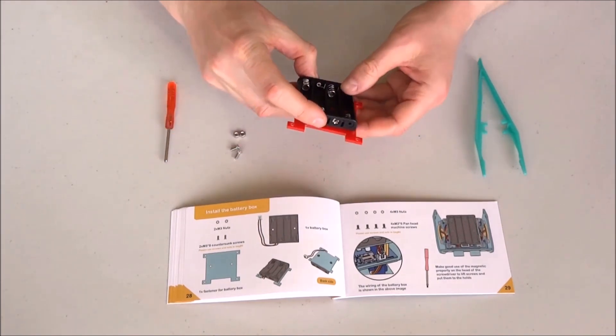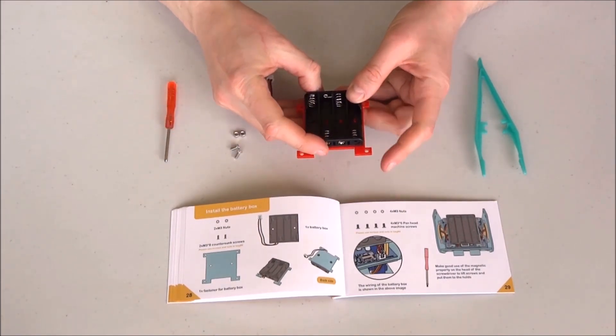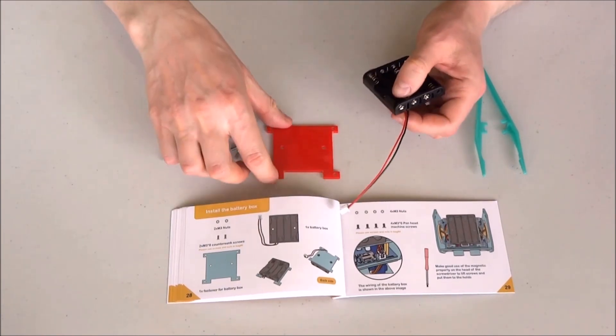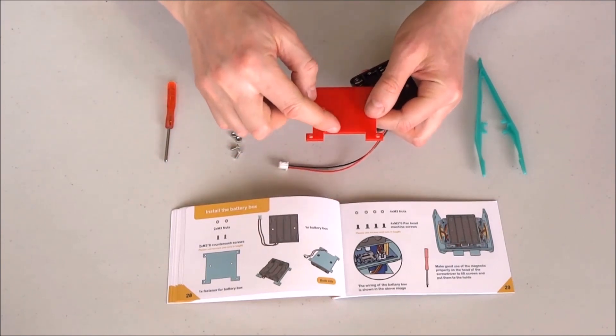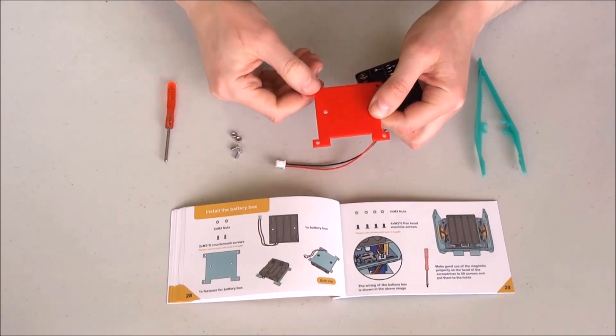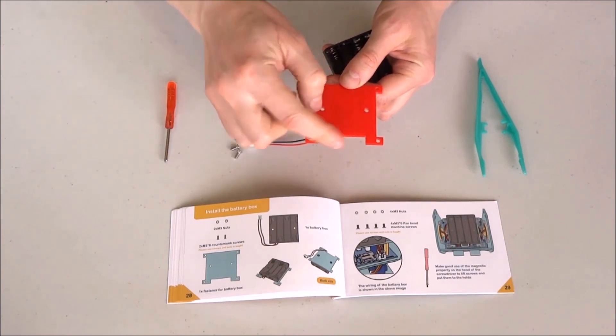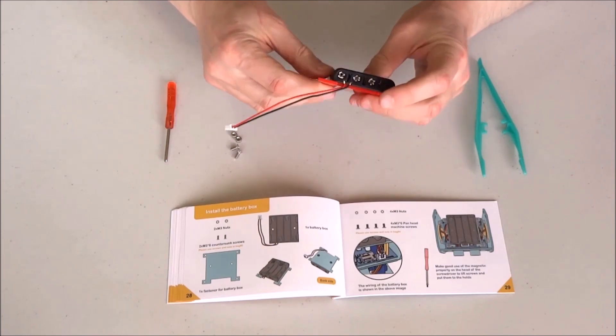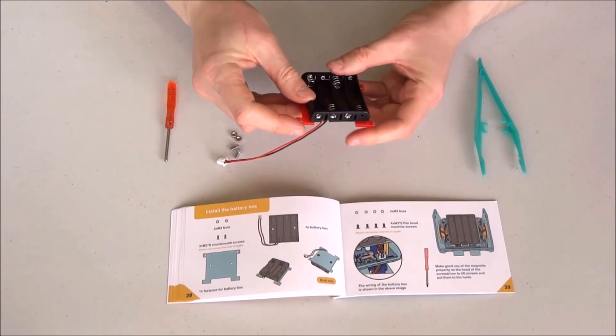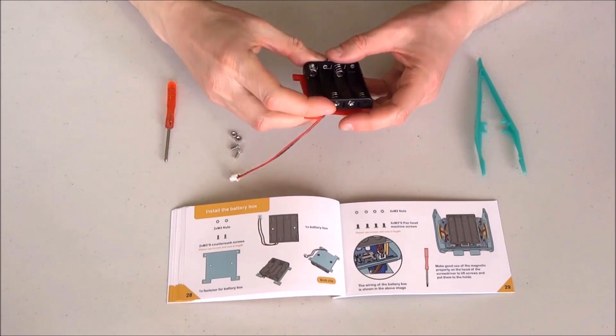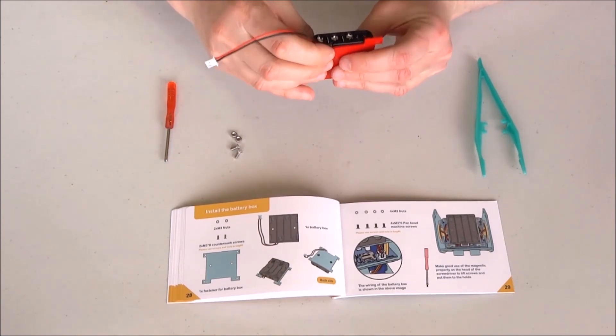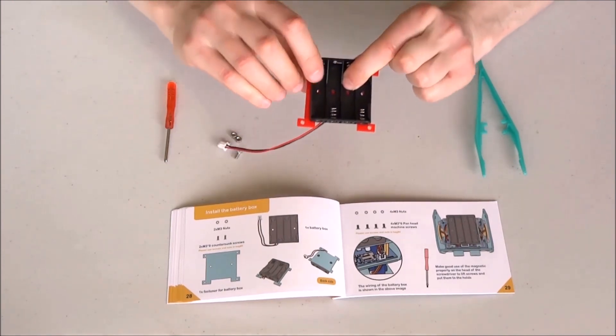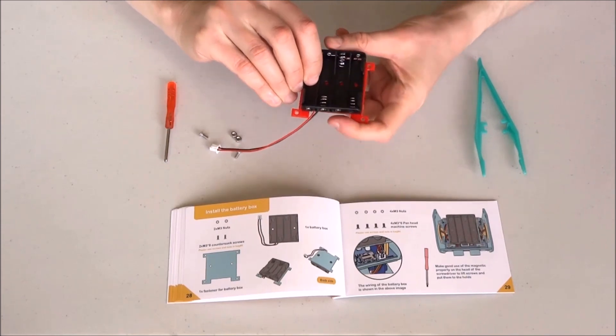Now we will mount the battery box like this. The cable will be oriented toward this cut area here. As you can see there is a cut area on this side and no cut area on this side, so the cable should go toward the cut area.